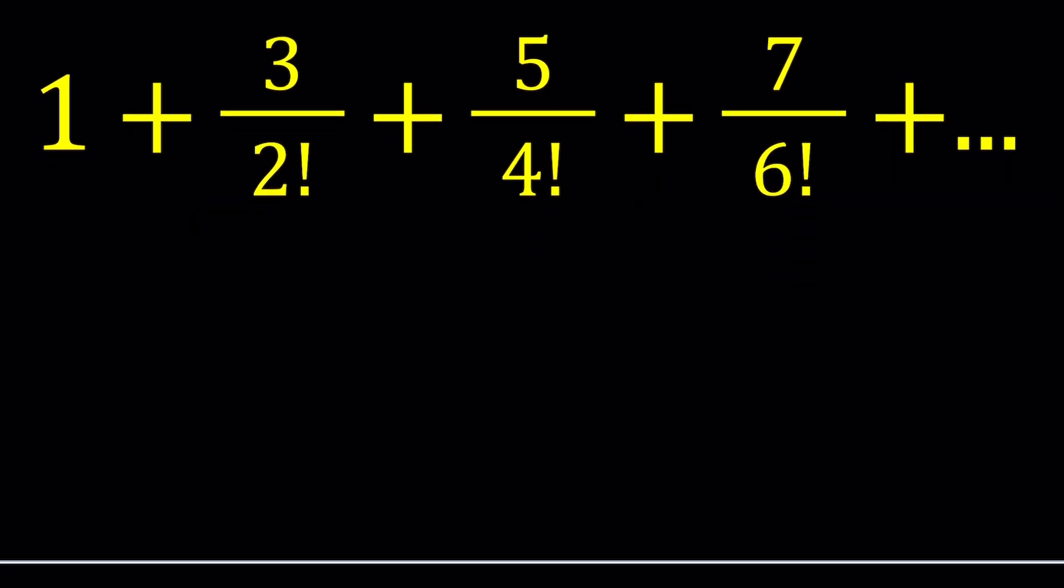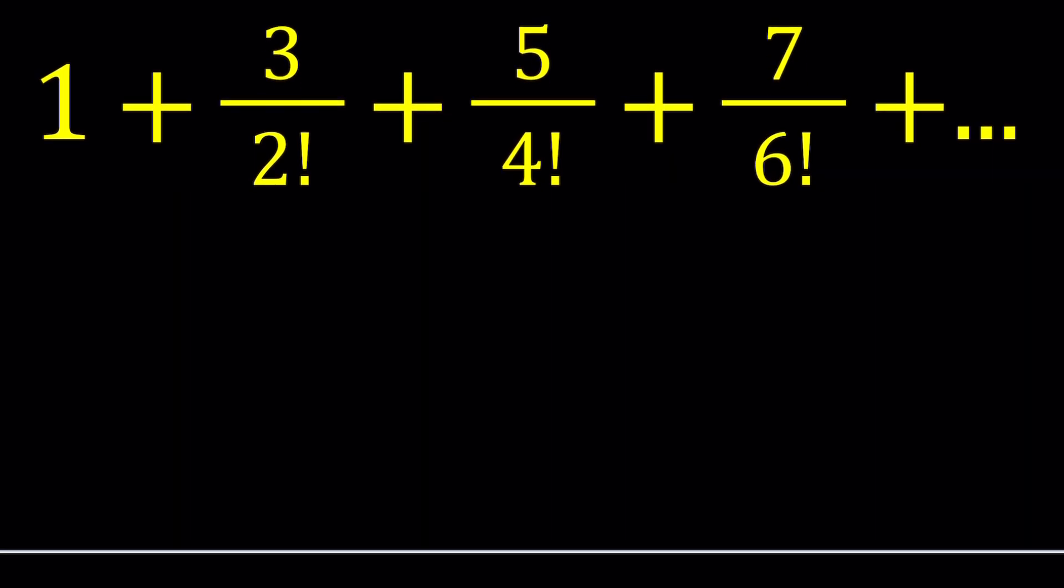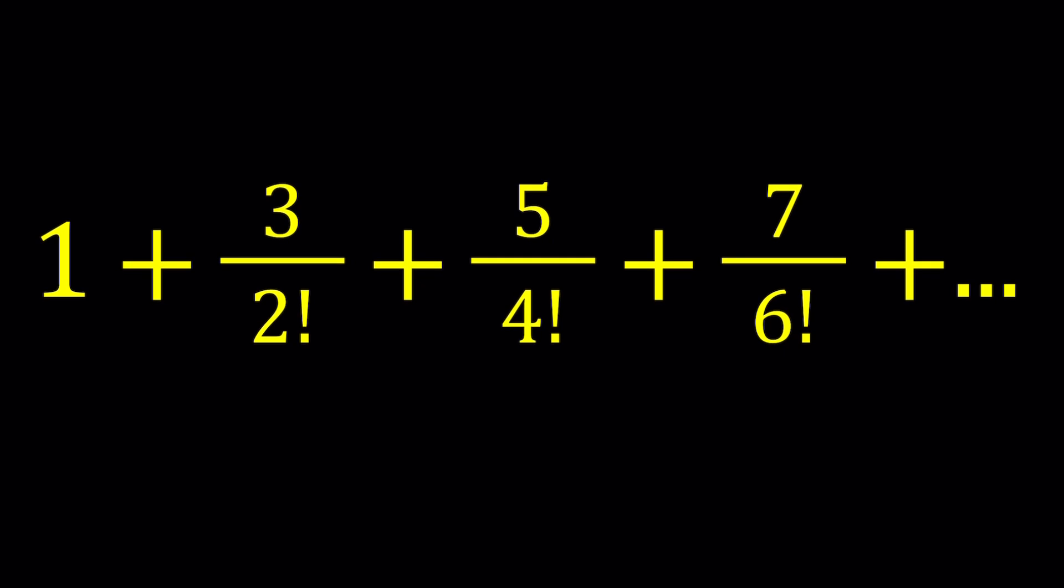So first of all I can go ahead and break down each of these odd numbers which are in the numerator as follows. 3 can be written as 2 plus 1, 5 can be written as 4 plus 1, and then 7 can be written as 6 plus 1. So that we have 1 and an even number which is actually the same even number at the bottom which is factorial because if you think about it 3 and 2 are 1 apart, 5 and 4, 7 and 6, so on and so forth.